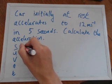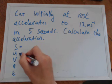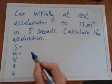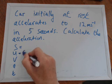So here we go. Start off by writing down SUVAT just like that. Then you decide what you know. Do you know the displacement? No. Do you know the initial velocity? Yes, initially at rest.